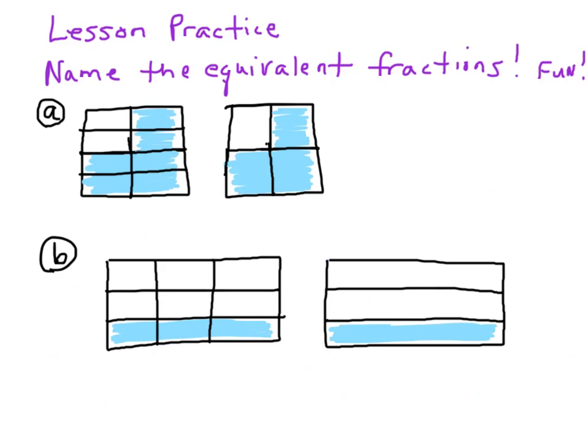So now for lesson practice — name the equivalent fractions shown. Let's take a look at this one: one, two, three, four, five, six, seven, eight; one, two, three, four, five, six — that's six eighths. And this is one, two, three, four; one, two, three — three fourths. Is that the same amount? Yes, sure is. Because if I were to do this, you would see one, two, three, four, five, six — it would be six eighths. Same deal.